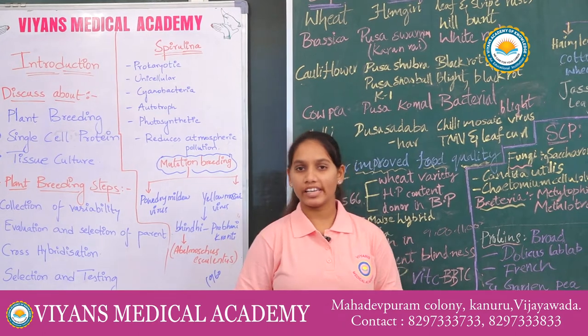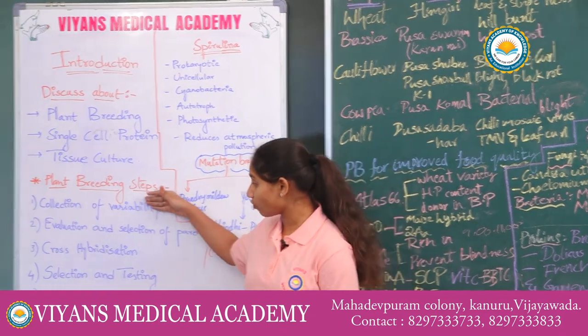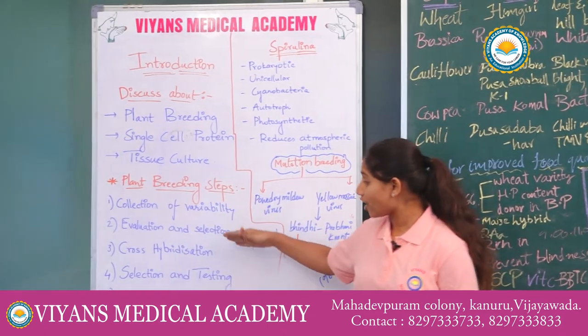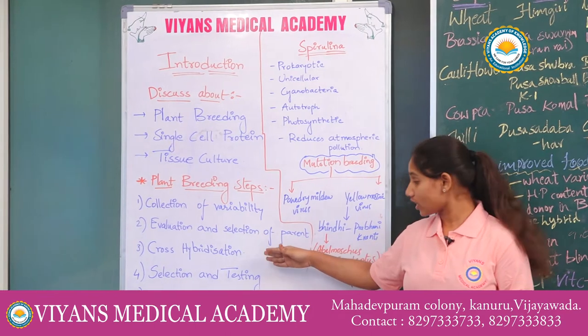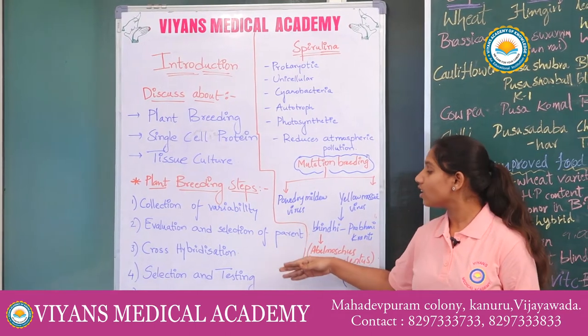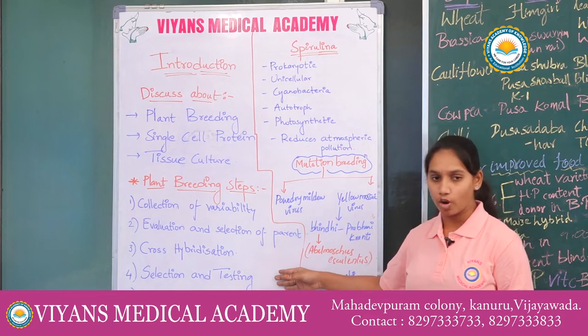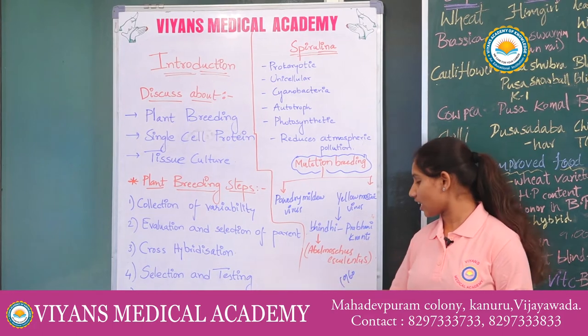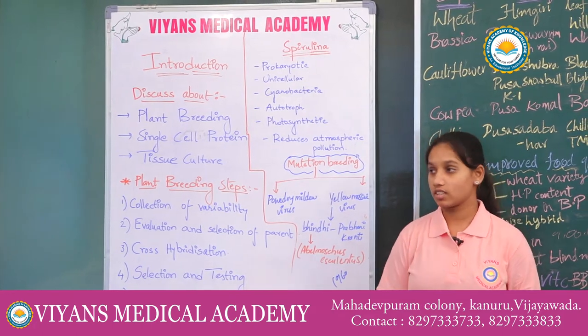Plant breeding mainly involves five steps: collection of variability, evaluation and selection of parents, cross-hybridization among selected parents, selection and testing of superior recombinants, and testing and commercialization of new cultivars.